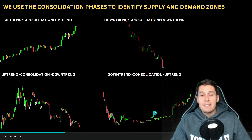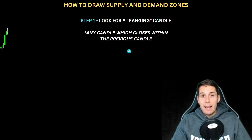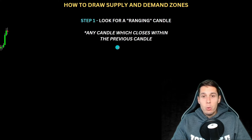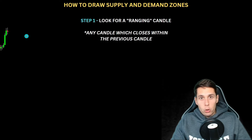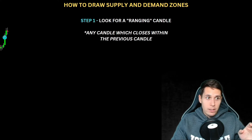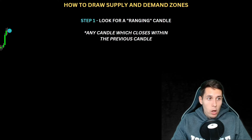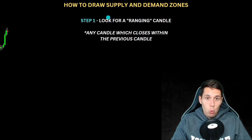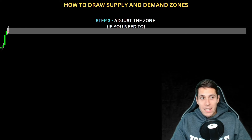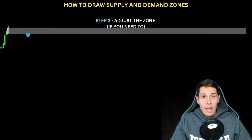Now let's get to business — how to draw supply and demand zones. I'll give you a step-by-step process. Step number one: look for a ranging candle. A ranging candle is any candle which closes within the previous candle. There are trending candles and ranging candles. For example, this candle here is a trending candle because it closed above the previous candle. But this red candle here is a ranging candle — and that's exactly what we are looking for. Step number two: draw a zone around the ranging candle, just like this.